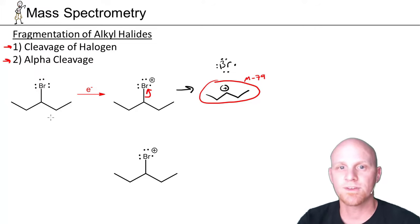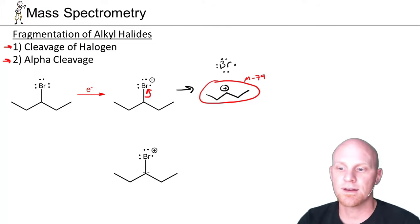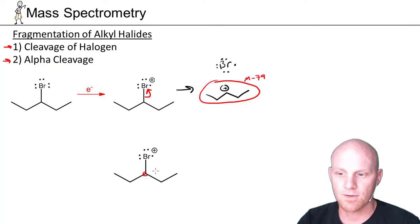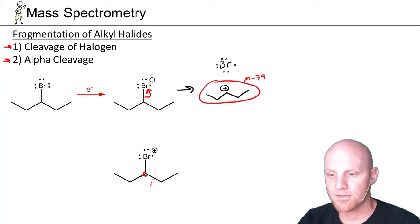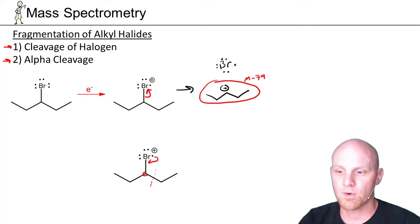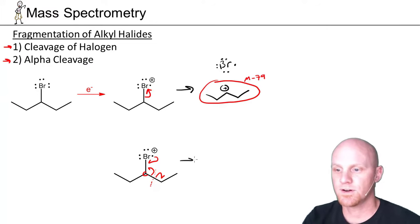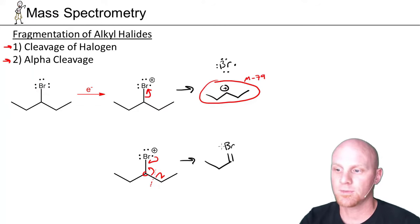Now let's look at alpha cleavage. With alpha cleavage, you actually want to break next to the carbon bonded to the bromine, so you'd break either this bond or the one on the left. We'll break the one on the right here. The way this works is we form half a bond to create a double bond to bromine from here, the other half from this bond, with the remaining portion retreating over here — and the result is a carbon-bromine double bond.